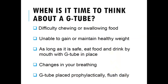Another thing we look at is weight. If patients are unable to gain or maintain a healthy weight, we might consider a feeding tube. Weight loss is very common in ALS and is multifactorial — patients lose weight from difficulty chewing or swallowing, muscle atrophy, reduced activity, and appetite loss. ALS patients typically burn about 30% more calories than the average person due to a hypermetabolic state observed through research.